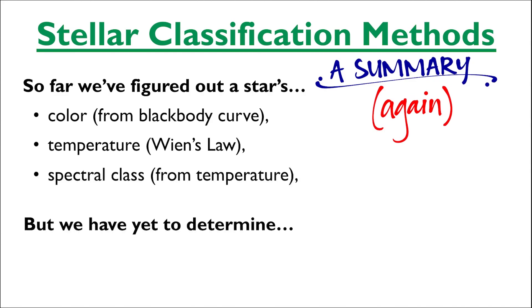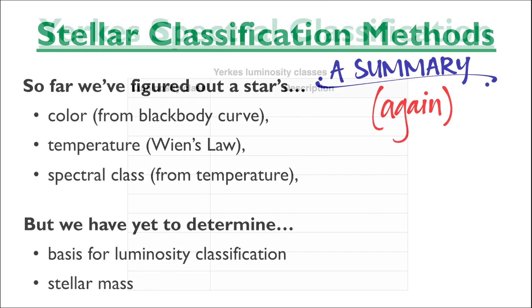But there are two things we have yet to do. First, understand the basis of the Yerkes classification system, and second, figure out a way to determine the star's mass. Then we can come back to the mass-luminosity relationship and take a look at it.